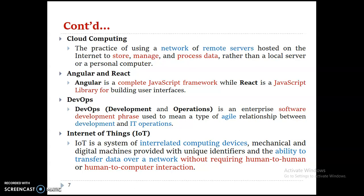Internet of Things is when many devices are interconnected, sharing data and making decisions — that is what we call IoT. It is a system of interrelated computing, mechanical, or digital machines that can be identified and are able to transfer data over a network without requiring human-to-human or human-to-computer interaction. In IoT, devices automatically connect, share data, and make decisions without human interaction.